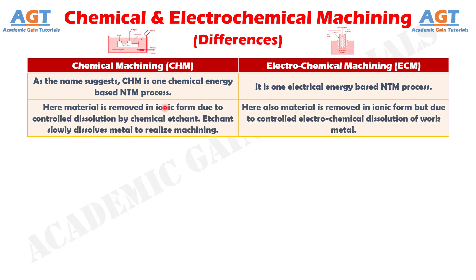Difference No. 2: In chemical machining, material is removed in ionic form due to controlled dissolution by chemical etchant. The etchant slowly dissolves the metal to realize machining, whereas in electrochemical machining, material is also removed in ionic form but due to controlled electrochemical dissolution of the work metal.